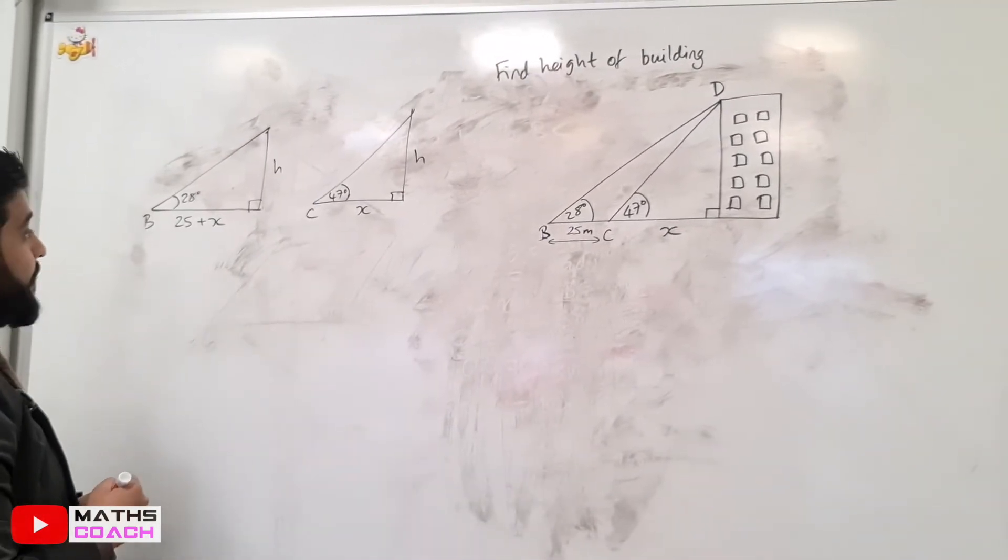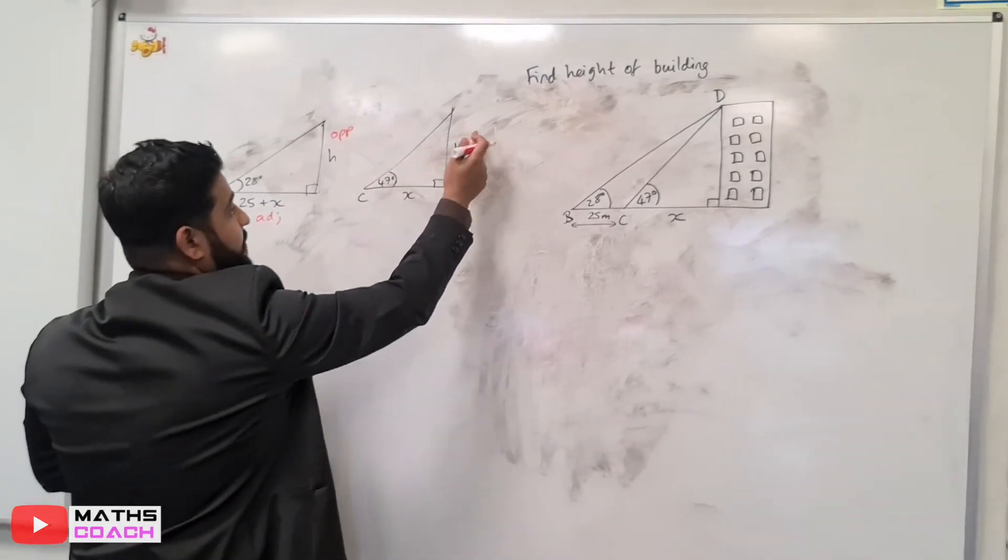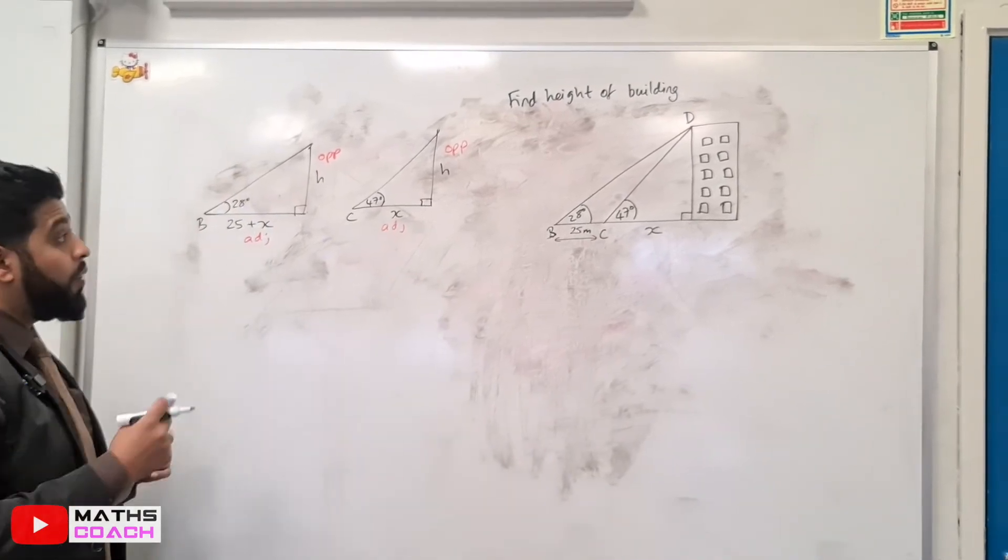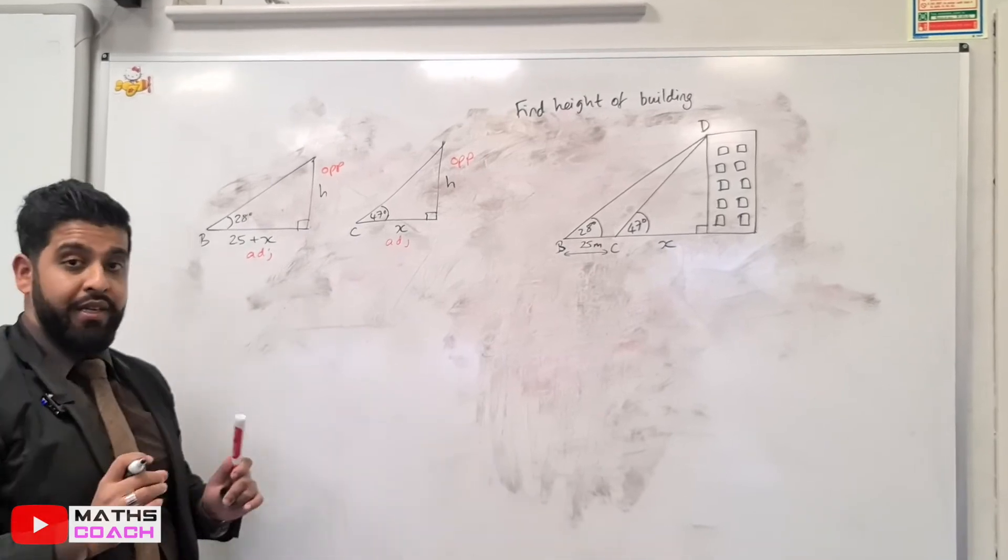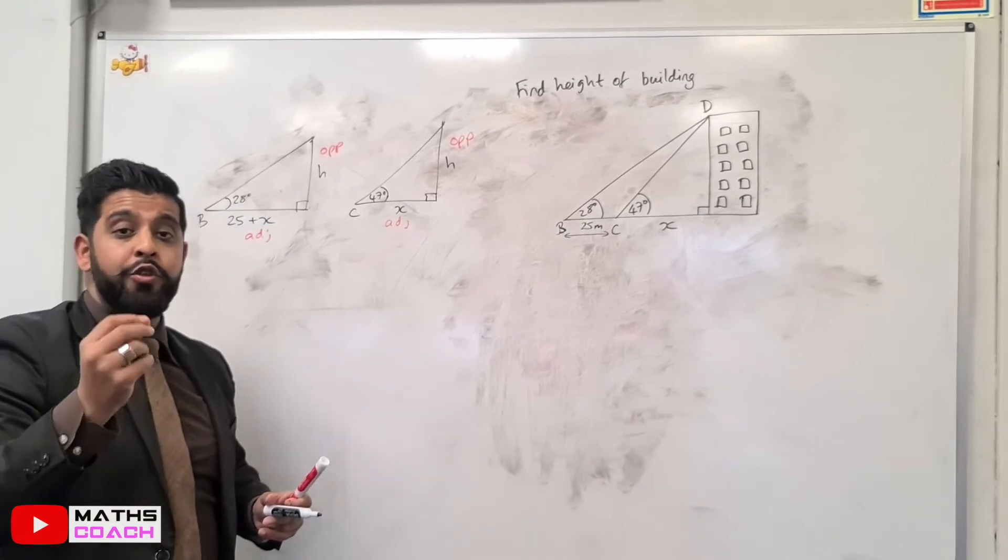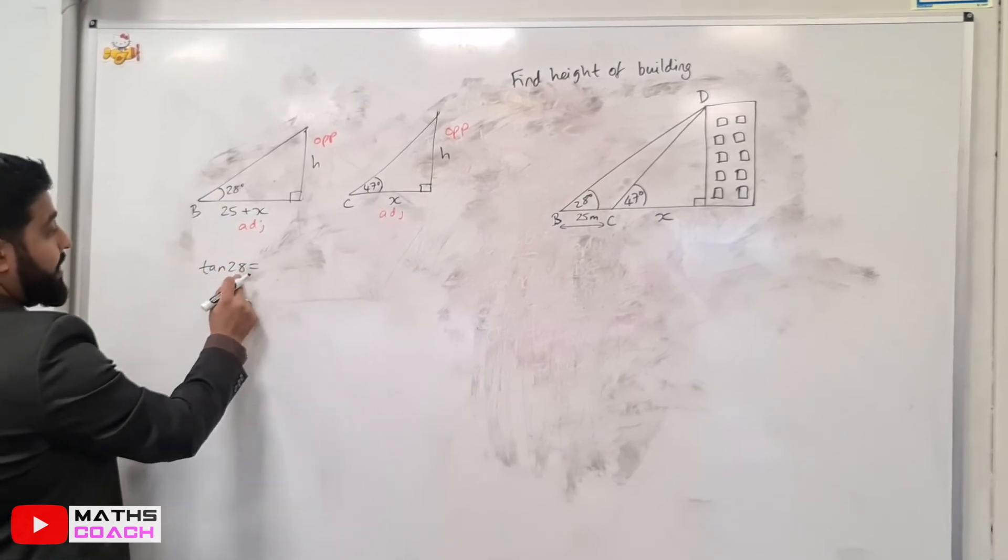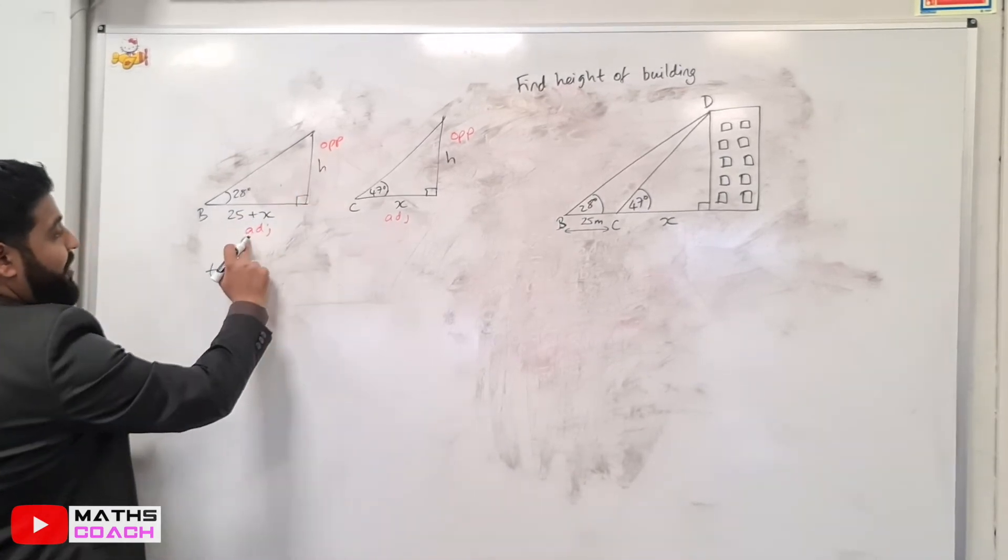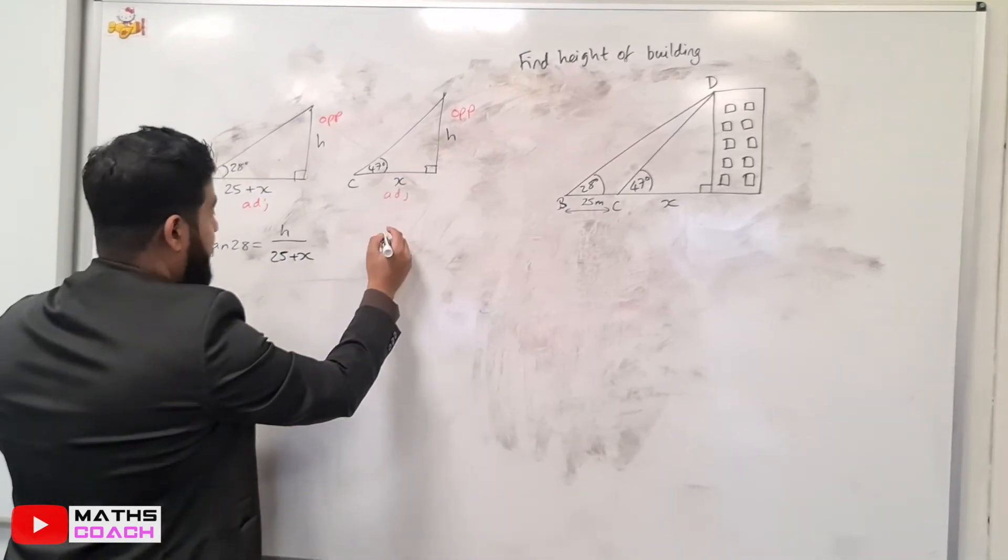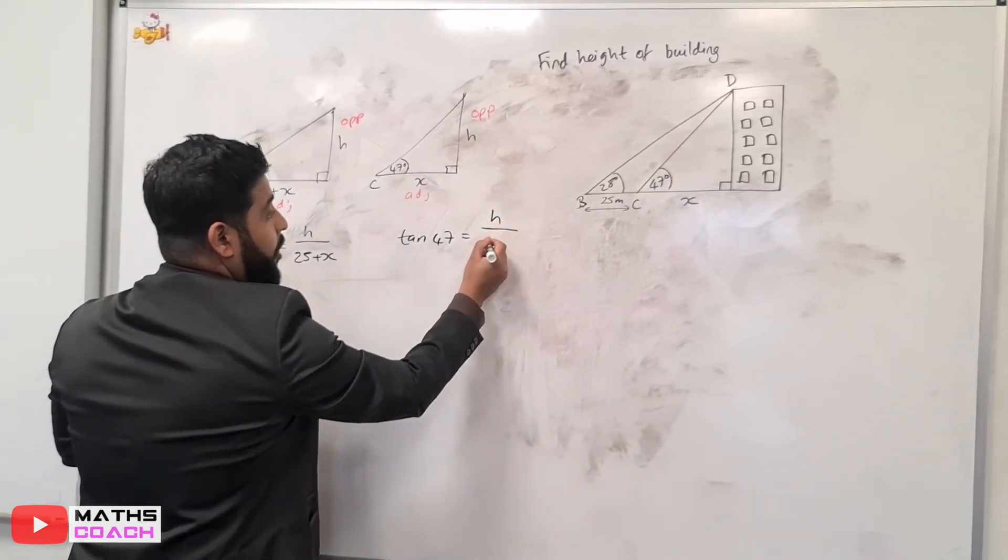Let's start the labeling process of our triangles. This is opposite because it's opposite the angle, and this is adjacent. And the same with this triangle as well. This is your opposite side, and this is your adjacent side. Now that I've labeled my triangle, what uses opposite and adjacent? We know that tan uses opposite and adjacent. For both of my triangles, I will write down an equation using tan. I have tan X, which is 28, so tan 28, is equal to opposite over adjacent. Opposite here is H over the adjacent, which is 25 plus X. And I will do the same thing here. Tan 47 is equal to opposite, which is H over X.